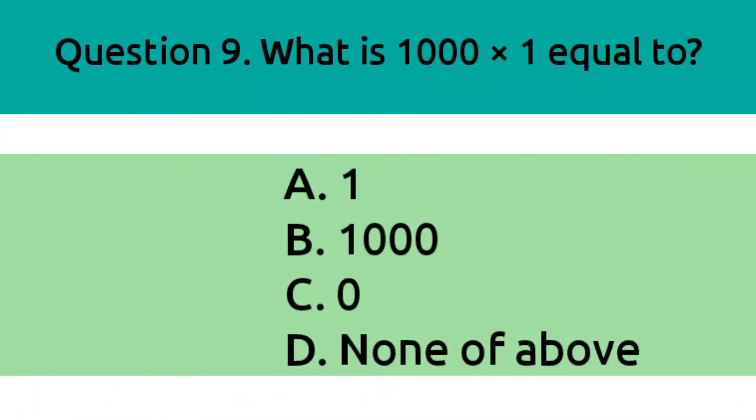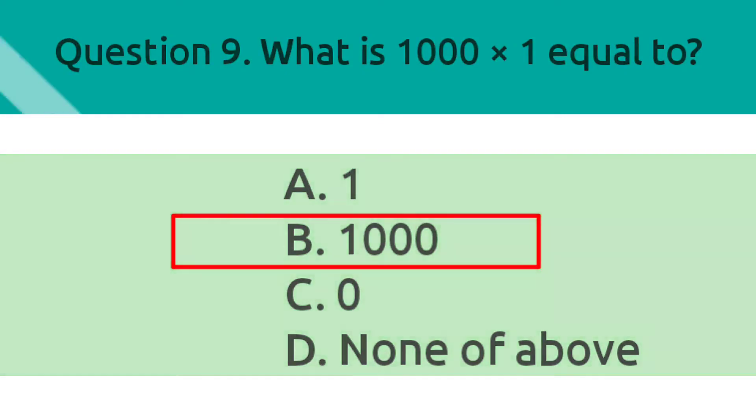Question 9. What is 1000 into 1 equals to? Option A, 1. Option B, 1000. Option C, 0. Option D, none of the above. And the correct answer is Option B, 1000.